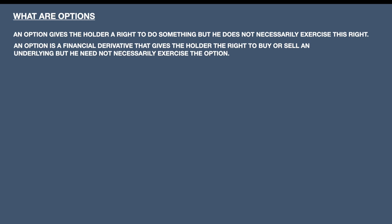An option is a financial derivative. Every option always has an underlying. Whenever you take any option — for example, whether it is a stock option or an index option — both will have an underlying. For a stock option the underlying will be the stock futures or stock spot, and for index options the underlying will be the index. For example, a Nifty index option will have Nifty as the underlying. This is called a financial derivative.